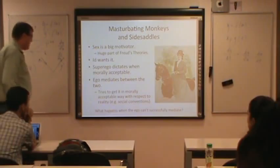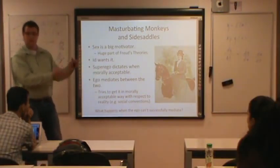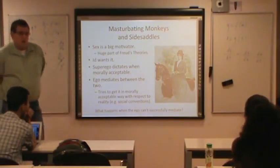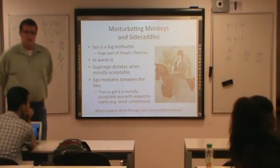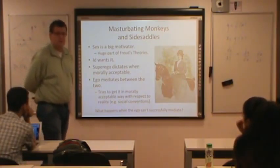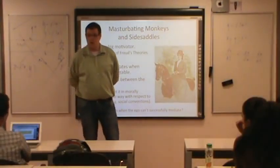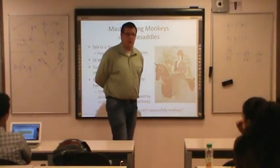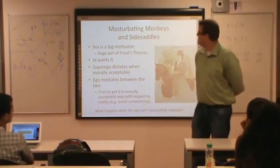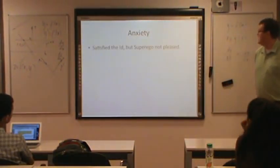So what happens when the ego can't successfully mediate between the id and the superego? Defense mechanisms. Why do we have defense mechanisms? To protect our ego. When our ego is threatened, how do we feel? Anxious. Anxiety is a big problem.